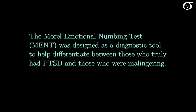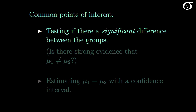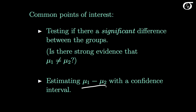The Morel Emotional Numbing Test, which I'm going to refer to as the MENT, was designed as a diagnostic tool to help differentiate between those who truly had post-traumatic stress disorder and those who were malingering. Here are scores on the MENT for 49 veterans seeking compensation and 70 veterans seeking treatment. Higher scores are indicative of individuals fabricating or exaggerating symptoms, and we can see that those seeking compensation seem to have higher scores on average. But is that a significant difference? We'll investigate using hypothesis testing and also estimate the difference in population means with a confidence interval.